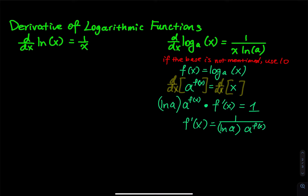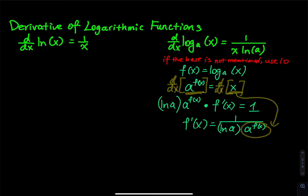That doesn't look like the formula yet. But recall from the exponential form that a^(f(x)) = x. Substituting that back in, we get f′(x) = 1 divided by ln(a) times x. That's how we derive the formula.